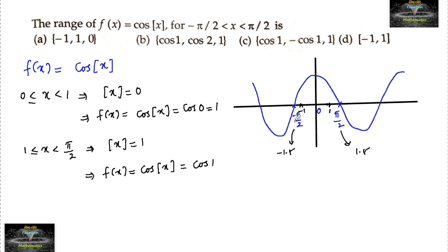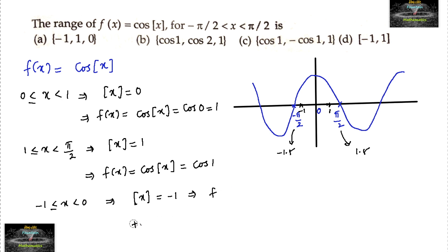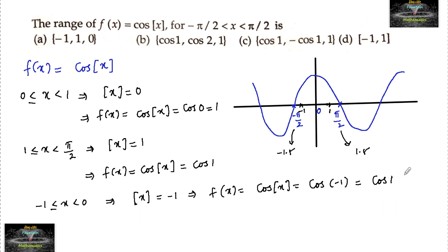For minus 1 ≤ x < 0, the step value ⌊x⌋ = minus 1, which implies f(x) = cos(⌊x⌋) = cos(minus 1) = cos(1), since cosine of minus θ equals cos θ. So this value is cos 1.